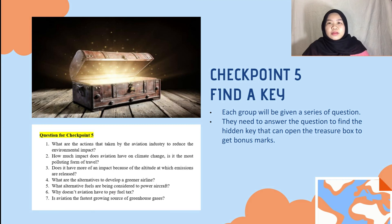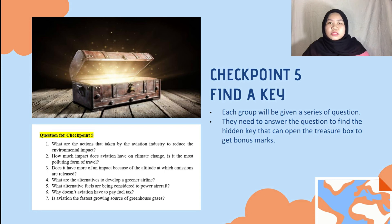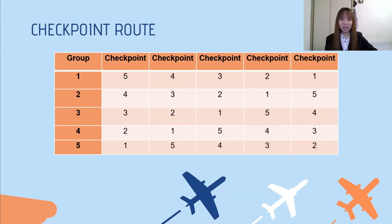Checkpoint number five is find a key. Each group will be given a series of questions and need to answer them to find the hidden key that can open the treasure box and get the bonus mark. This is the checkpoint route for each group. As you can see, each group will start at a different station.